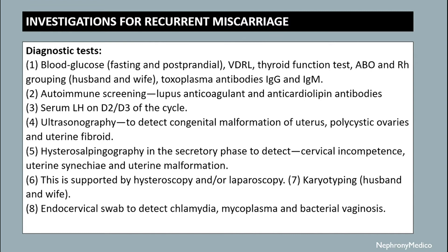Investigations include blood glucose fasting and postprandial, LDL, thyroid function tests, and autoimmune screening for lupus anticoagulant and anticardiolipin antibodies. Serum LH can be done. Sonography can be done to detect congenital malformations of the uterus, polycystic ovaries, and uterine fibroids.